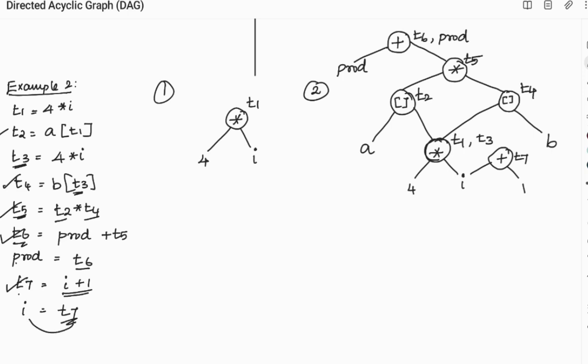Again the t7 gets assigned to i. So t7 and i are the same. So it's very clear for a given basic block we can easily construct the DAG. That is, common sub-expressions we can eliminate. Thank you.